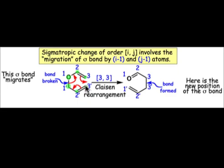This means that the σ bond moved over by two atoms. We call this a [3,3]-sigmatropic rearrangement, and this particular one with this vinyl ether-allylic ether is known as the Claisen rearrangement.